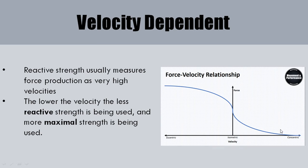For someone who can produce very little force at high velocity, the curve shifts down. Essentially, we're measuring how much force we can produce at very high velocities. Because the velocity is so high, we don't have time to produce a lot of force. The lower the velocity, the less reactive strength is used and the more maximal strength is used.